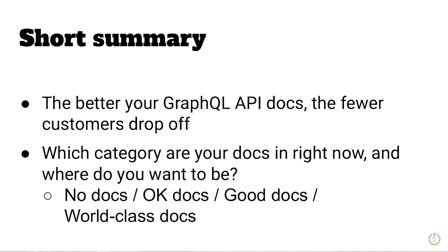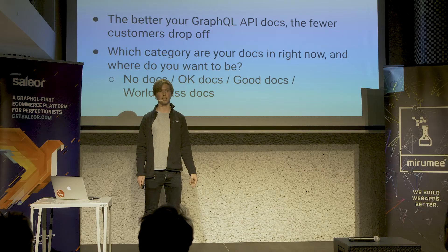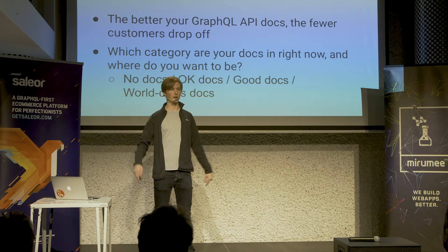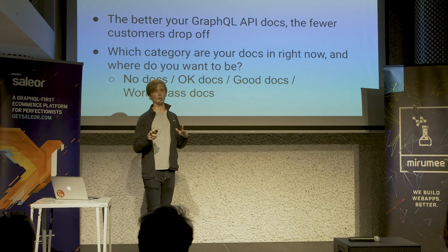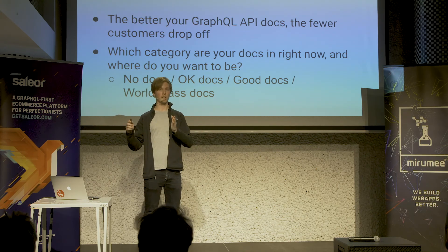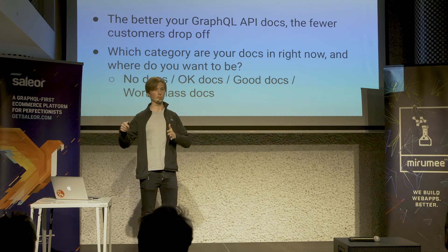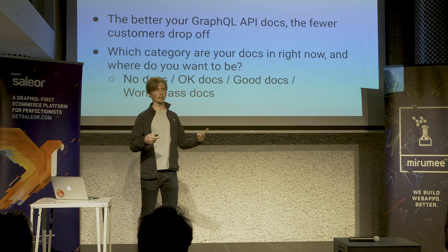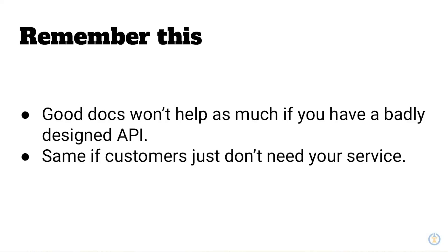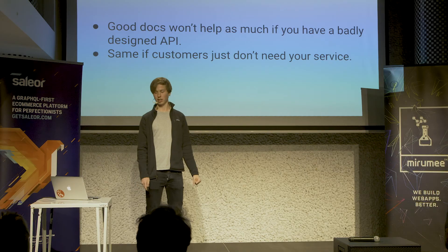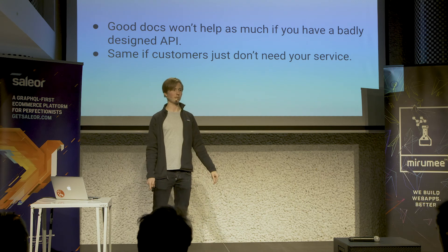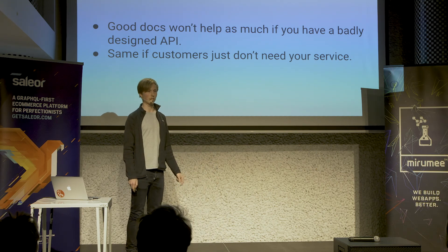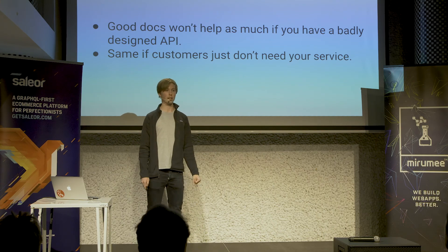So in summary: we talked about why documentation is necessary for GraphQL APIs, the buckets you can have — no docs, OK docs, good docs, great docs, world-class and exceptional docs — and how you can think for yourself about which bucket your documentation falls into and how to get to the next one. We also discussed how good API design can help with this. Just remember: good docs won't help very much if you have a badly designed API. And if you've built an API but customers don't really need it, your documentation is not going to change anything. Focus on building a good product that solves the customer need, and then also focus on building a good API that actually makes sense and is pleasant to use.